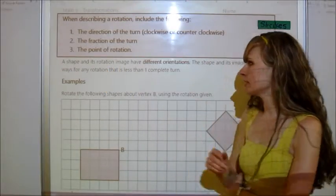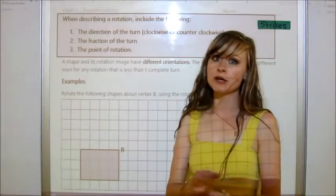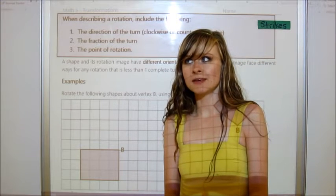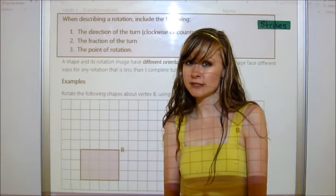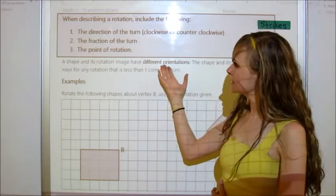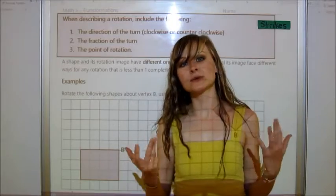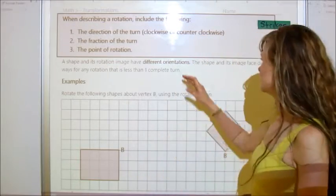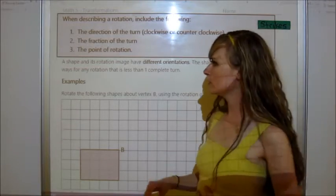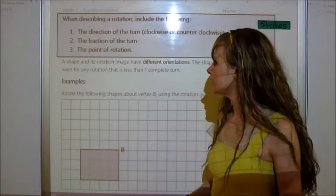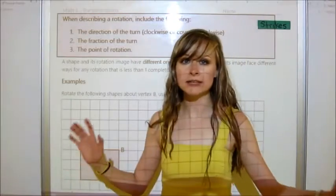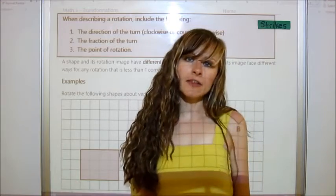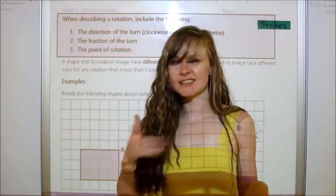So a shape and its rotation image have different orientations. Remember the translation had the same orientation. The reflection had the opposite orientations. And now we would just say it has different orientations, because it depends on the rotation for what the orientation is. It's just different. And then the shape and its image face different ways for any rotation that is less than one complete turn. So unless it's a whole turn like that, then it's going to be a different orientation. Otherwise, if it goes a whole turn, it's the same orientation.